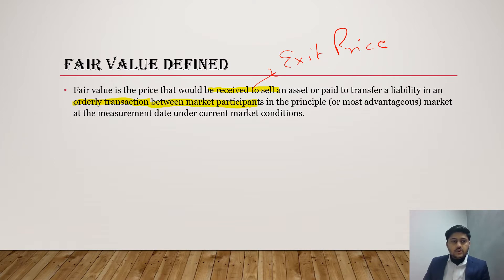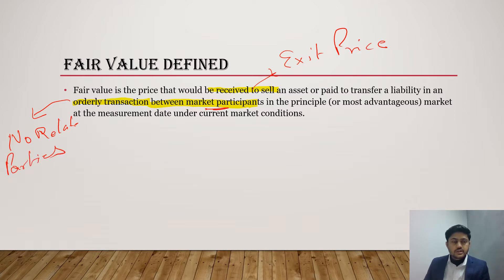The second main point is 'orderly transaction between market participants.' Orderly transaction means between market participants — that is, no related parties. If it is between related parties, it is not considered an orderly transaction. It should also be independent, so if there is no related party, that means it is an independent transaction.